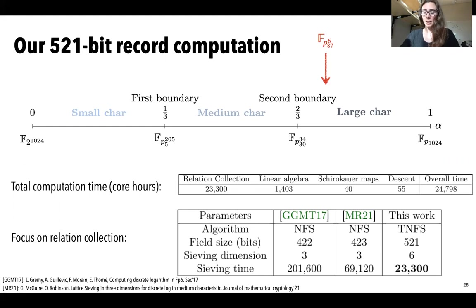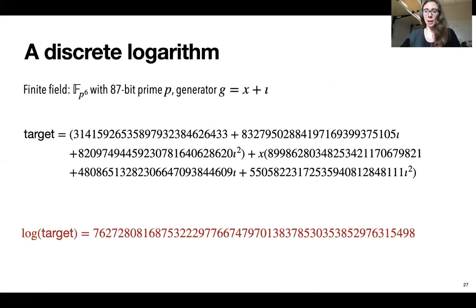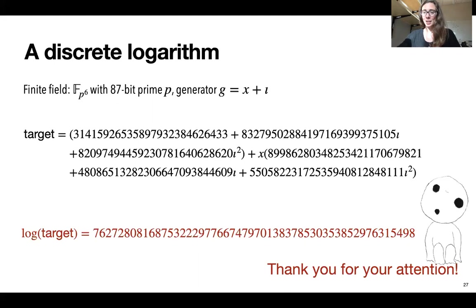We were pleasantly surprised by how fast our sieving algorithm works. In the end, we ran the descent step and computed the discrete logarithm of a target element in FP^6, where p is an 87-bit prime. We chose a target where you can recognize the digits of pi, and this is our discrete logarithm of that target element in the finite field. Thank you very much for your attention; I'm happy to answer questions during Asiacrypt or remotely.